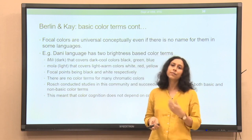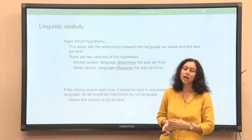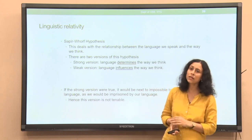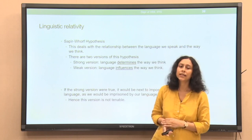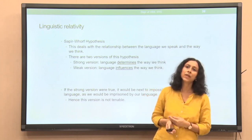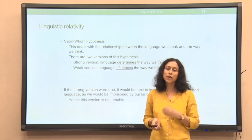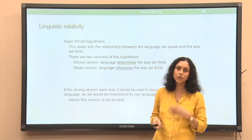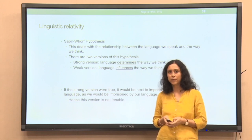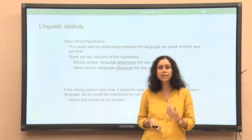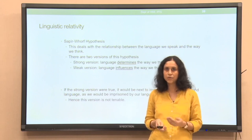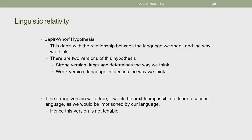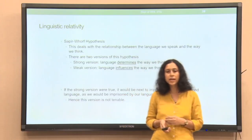Why are we talking about color cognition depending on color terms? Because there is a very important theoretical position taken by Sapir and Whorf and their followers, called linguistic relativity, which says that the language we speak — the semantic structure of the language — has a strong impact on the way we slice up the universe, the way we look at and understand the world. Color cognition in the Dani community is examined from the perspective of the color terms they have.